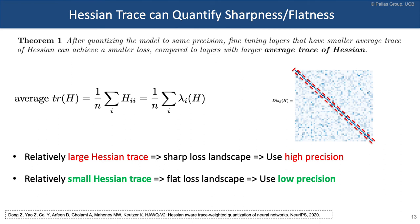We showed theoretical results in a HAWQv2 paper accepted at NeurIPS, where we showed that under certain assumptions, the right metric is the trace — the sum of the diagonal of the second derivative. The trace equals the sum of all eigenvalues of the Hessian. If the trace is small, the loss landscape is flat across all directions. For a layer with, say, 100,000 parameters, a small trace means the loss landscape is flat across all 100,000 directions.